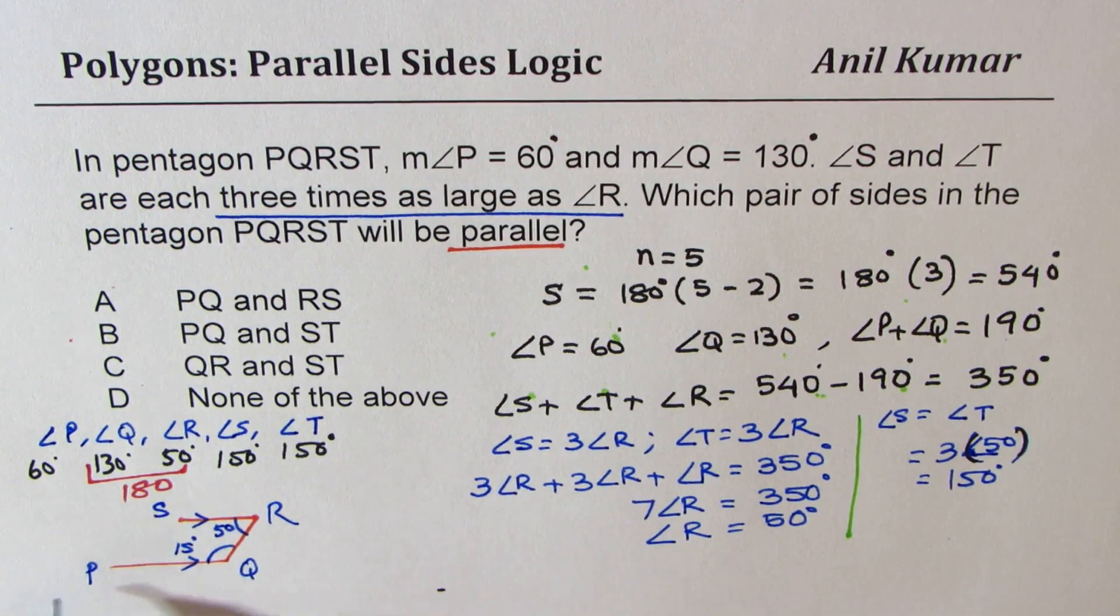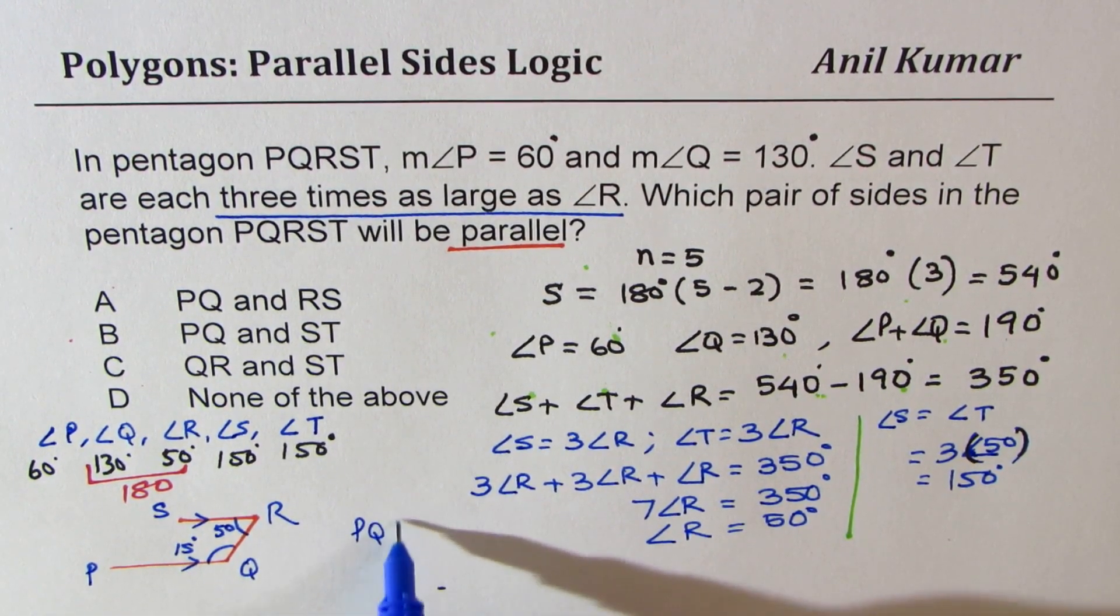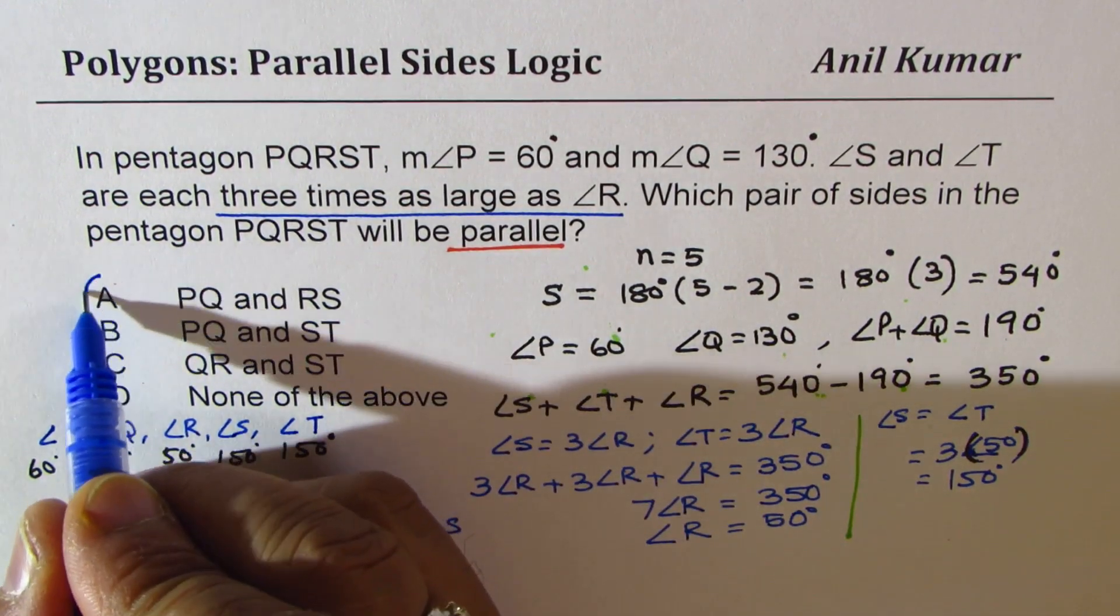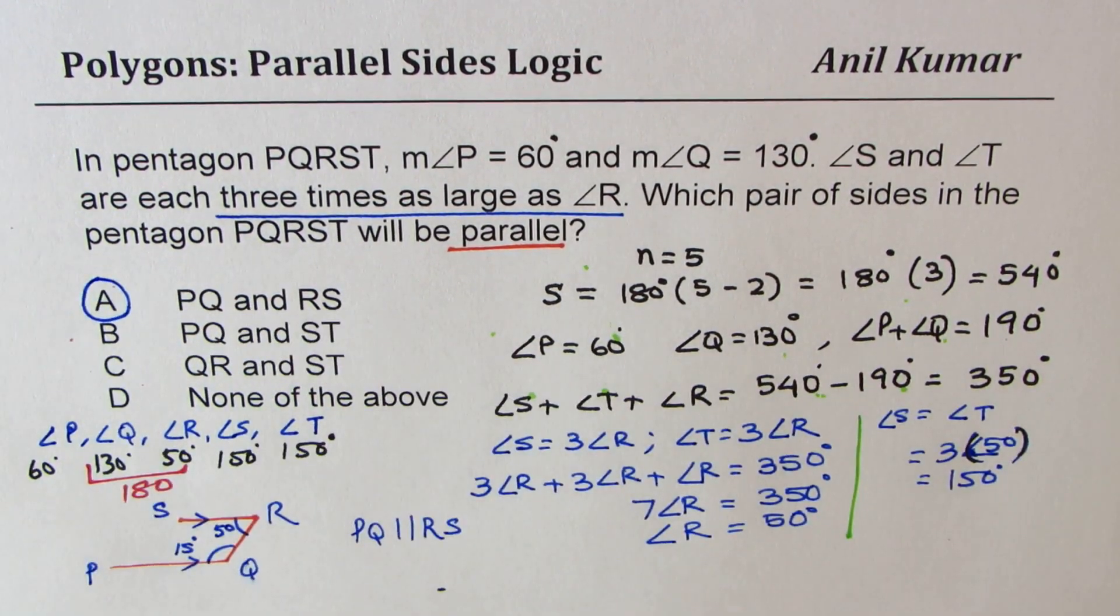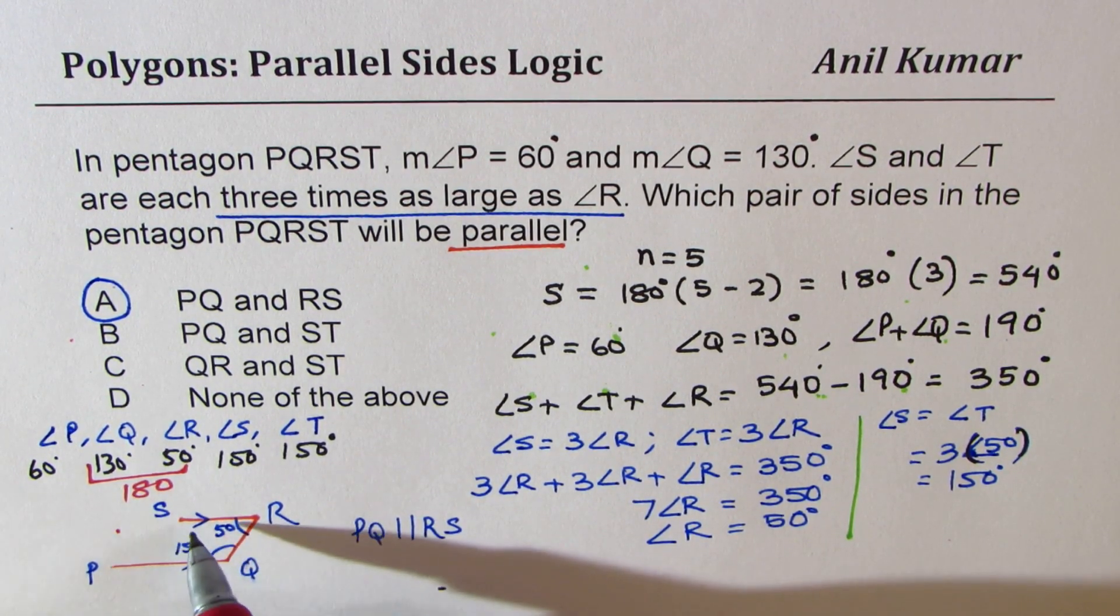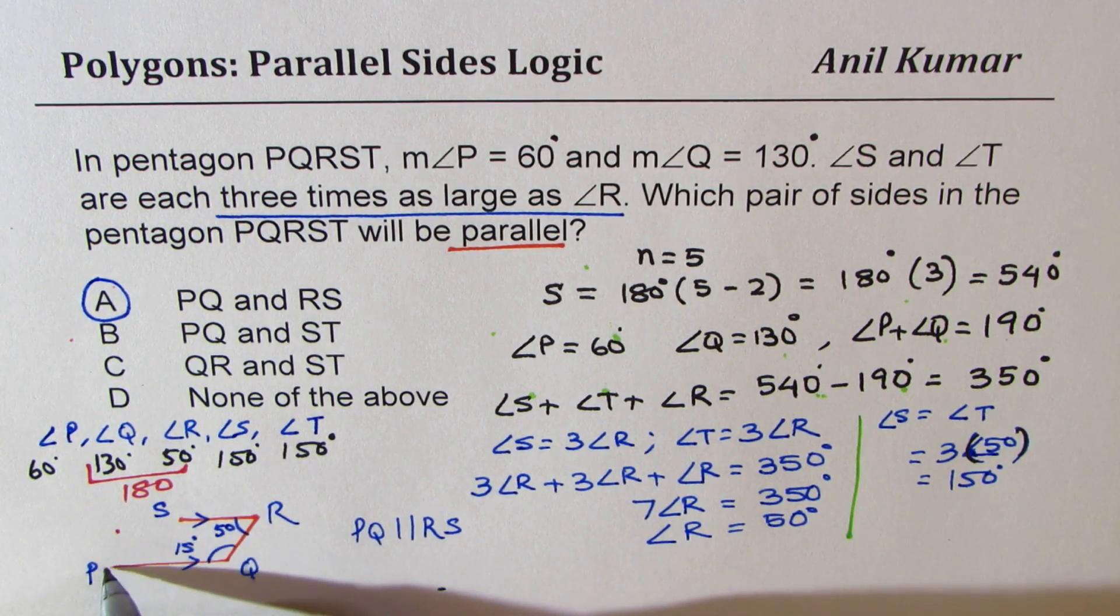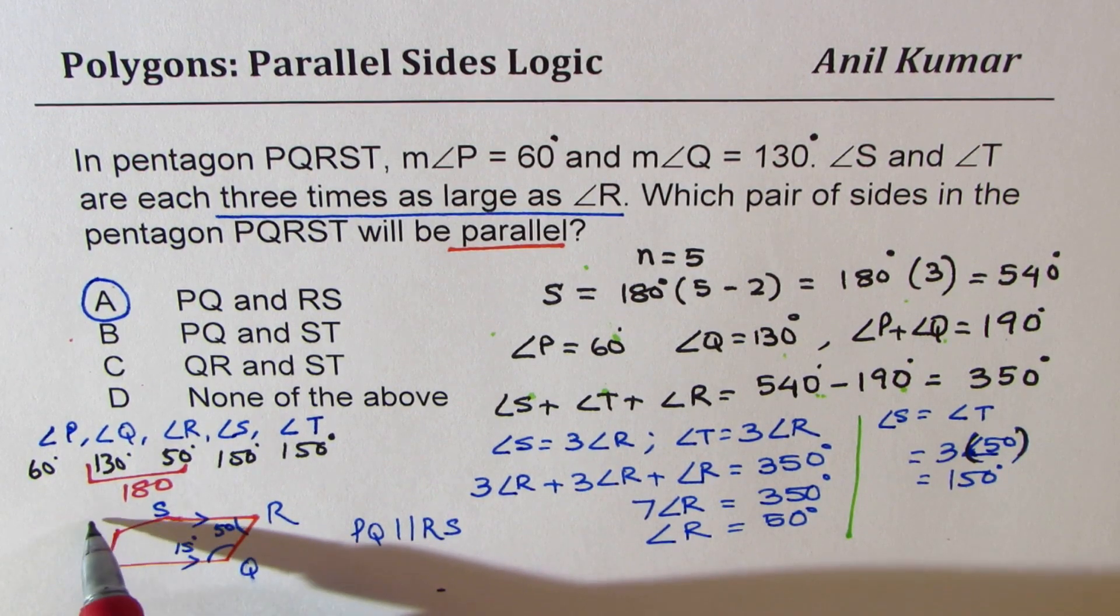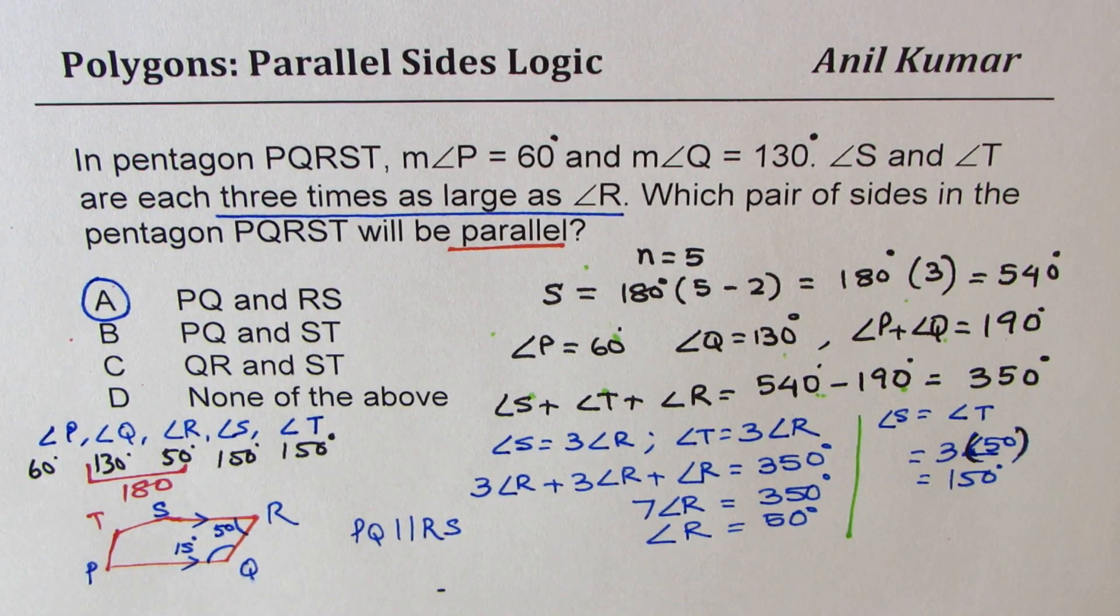Then the other point is S. And that gives us PQ as parallel to RS. So PQ parallel to RS is the right option. Does it make sense to you? PQ parallel to RS is the right option. Now T could be any other point. So that makes 150 degrees with both. So it could be kind of like this. Let's just complete this. So that is how we can actually find which two sides are parallel.